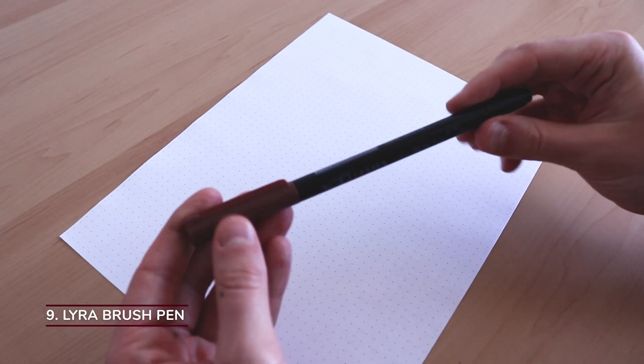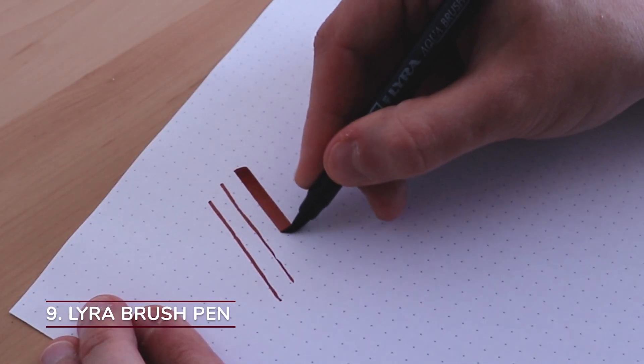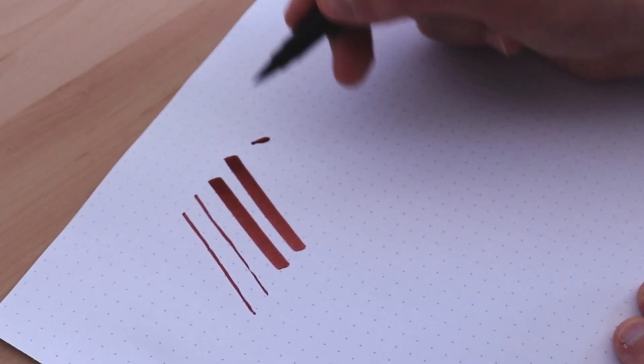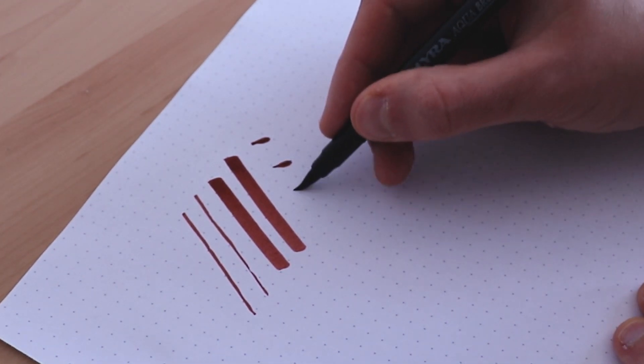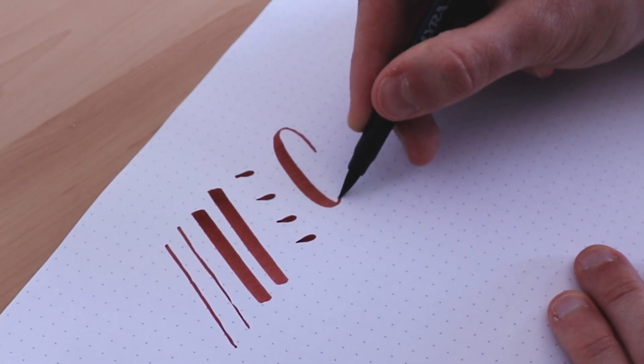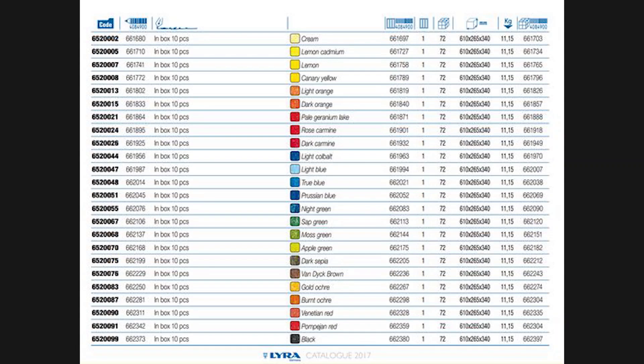Next up is the Lyra brush pen. The size of the nib is medium large, the nib elasticity is medium firm, it has a medium ink flow and you can choose between 24 different colors.